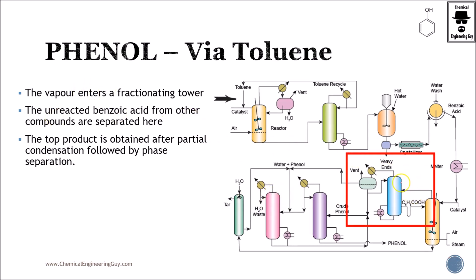The vapor part enters this column, which separates all the off-gases — carbon monoxide, nitrogen, oxygen leftovers and so on. On the bottoms, we find unreacted benzoic acid which is sent back to the reactor. So most of the phenol is still present in both the liquid and vapor streams.